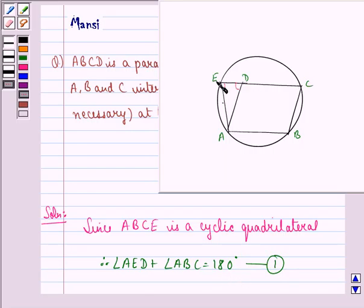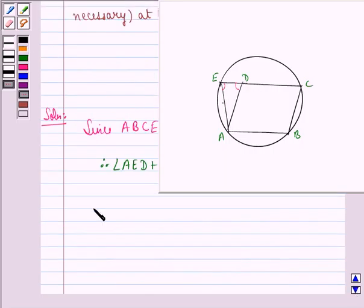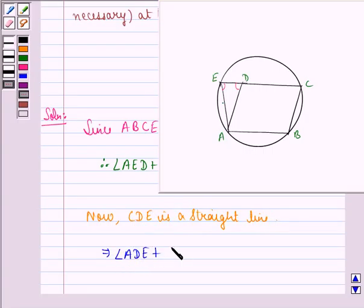Now, CDE is a straight line, and because this is a straight line, angle ADE plus angle ADC will equal 180 degrees. The sum of linear angles on a straight line equals 180 degrees.